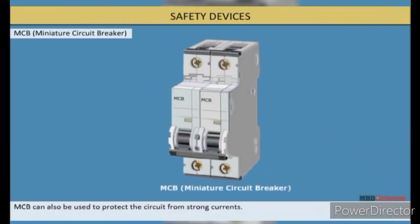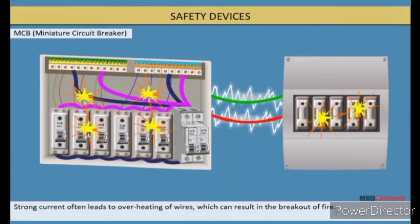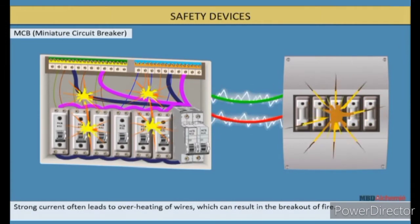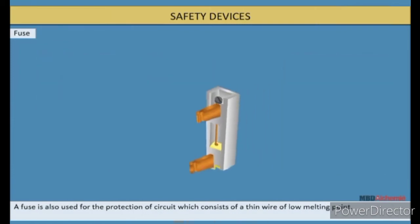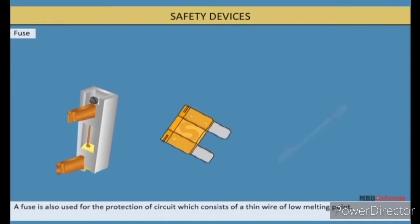Safety devices: Mini circuit breaker used to protect circuit from strong current. Strong current often leads to overheating of wires, which can result in the breakout of fire. Fuse also used for protection of circuit, which consists of a thin wire of low melting point.